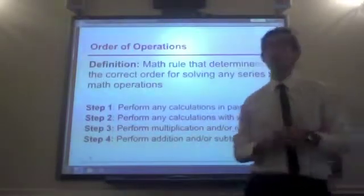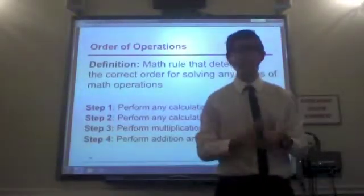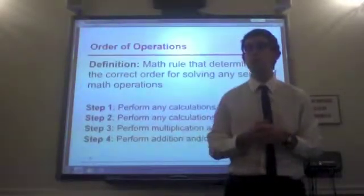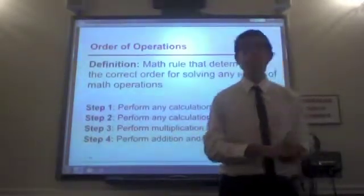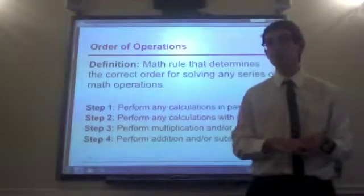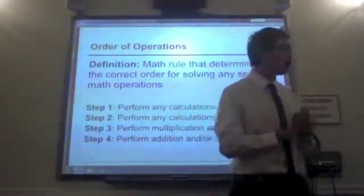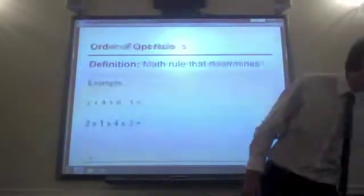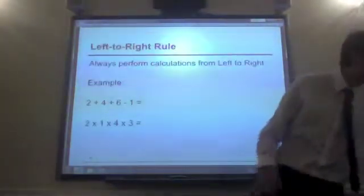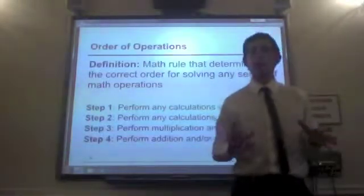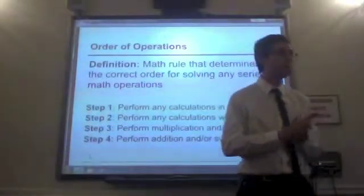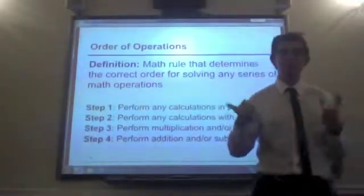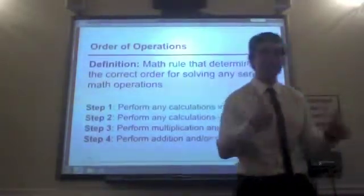Now, the third step is to do multiplication and or division. So, it depends whether it comes first or last. It's the same order. So, it doesn't matter if the multiplication comes first or the division comes first. You do both of them as well. And the last one is addition and or subtraction. Are there any questions so far on the order of operations? I don't know if you guys have any problems so far. No? Awesome. Great. Can you guys give me a thumbs up or a thumbs down? Okay. Awesome. Great.